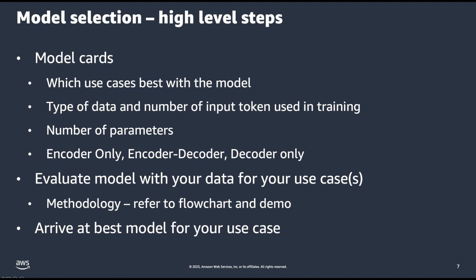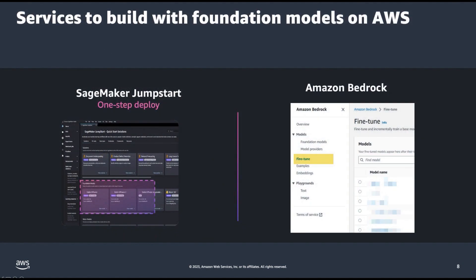So once you've decided on a use case and chosen a model, you will need to get started using purpose-built tooling. AWS offers a rich ecosystem of services to help customers build and deploy large language models. One such service is SageMaker JumpStart, which is for customers who want to deploy a large language model onto dedicated hardware. It offers a one-click deployment for a variety of large language models, and these models are deployed on pre-tested instance types. Some models can be fine-tuned. And because this is accessed via SageMaker Studio, you can also use the full SageMaker ecosystem, which includes a feature store, GitHub integration, and SageMaker Pipelines.